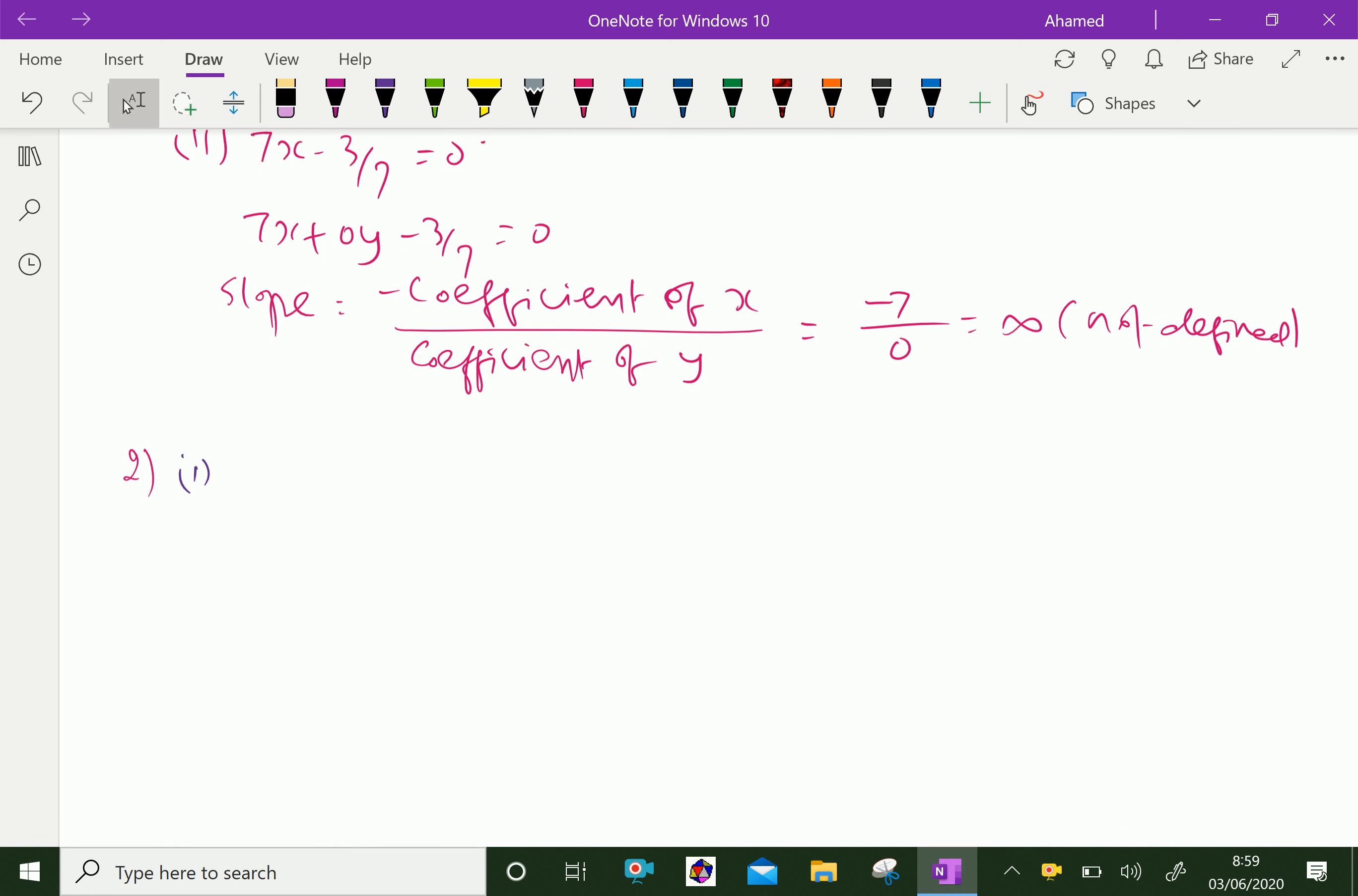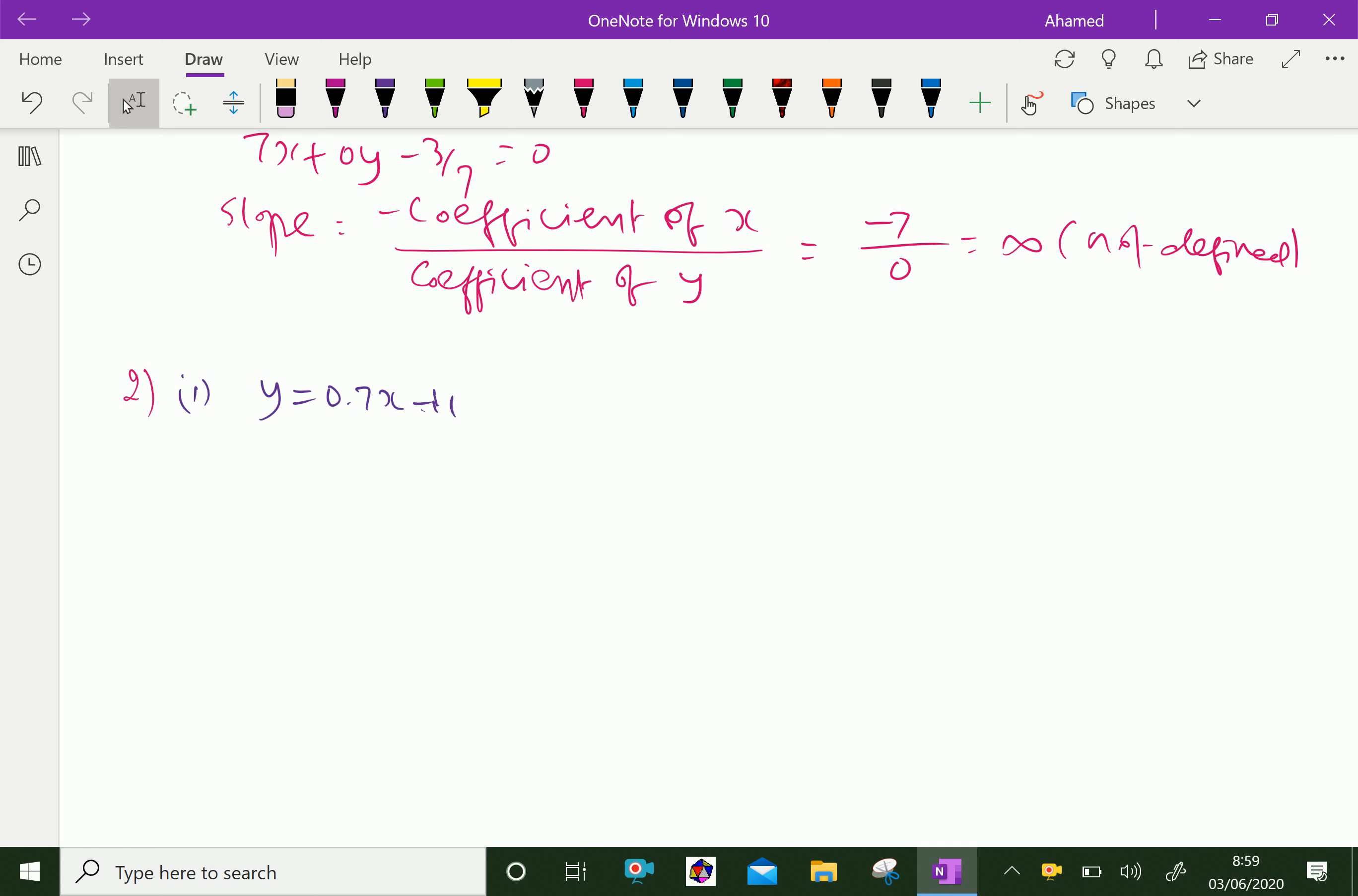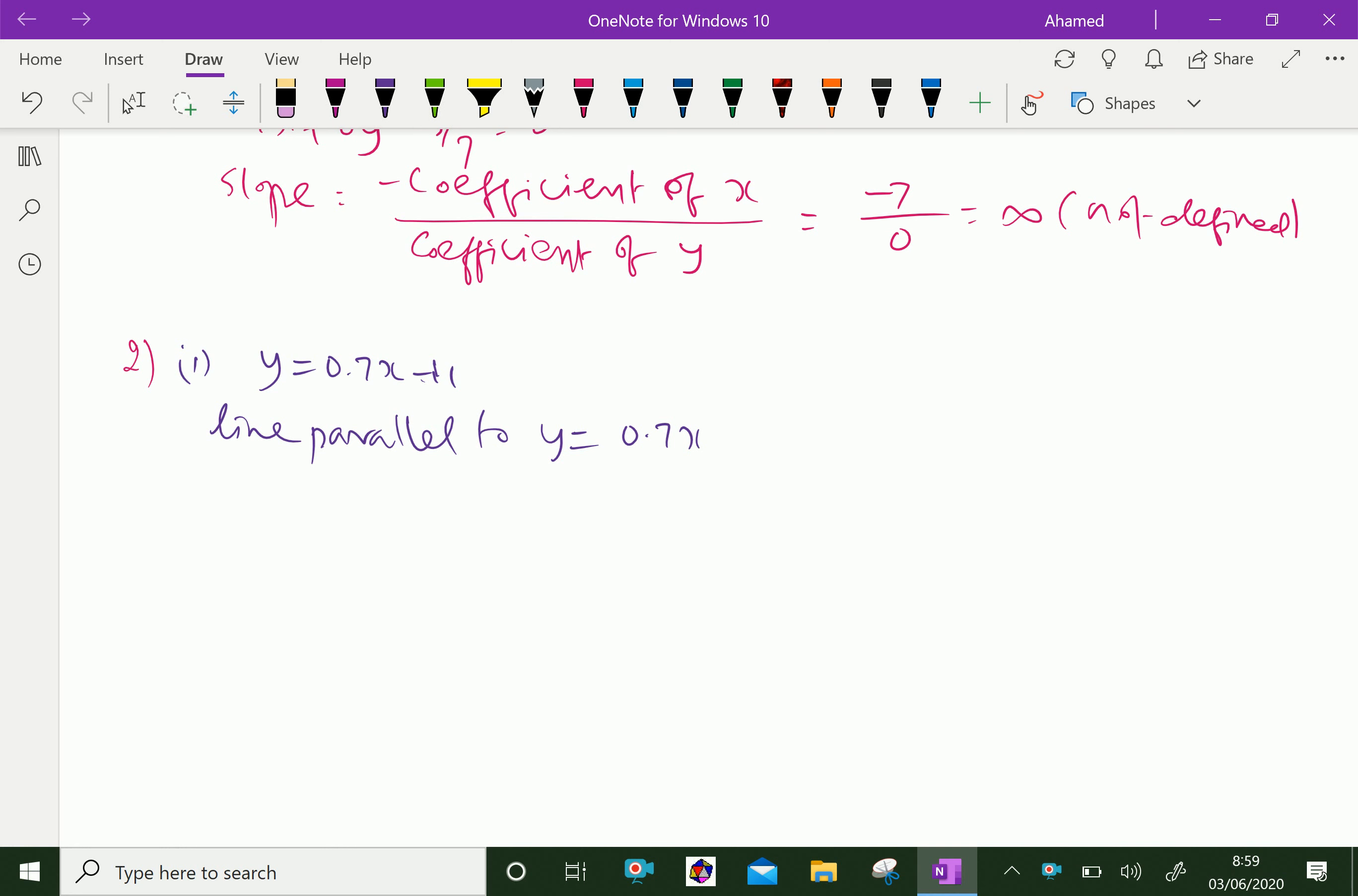Now, we need a line which is parallel to the given line. A line parallel to y = 0.7x - 11 has the same slope 0.7 with different constant c.